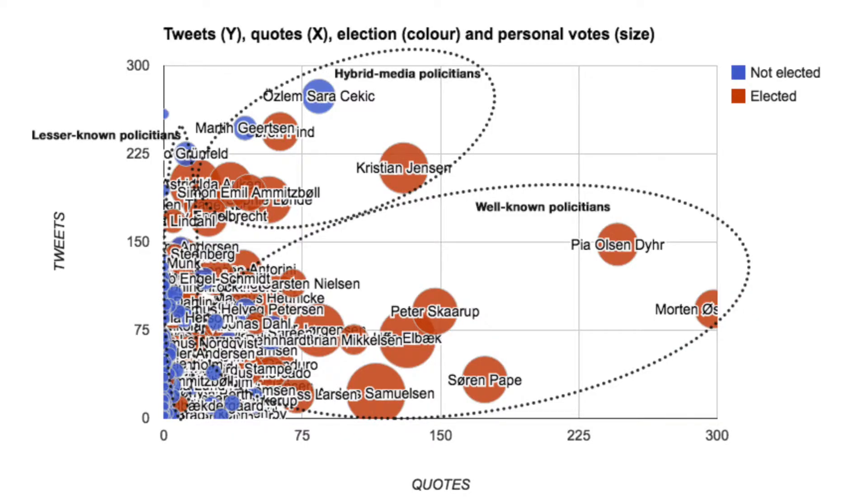I am a media scholar and I look at media texts and media actors, and more specifically on political communication. Because journalism is very often focused on politicians, we look at what's going on in media texts, what's going on with the actors. We look at social media presence and we look at patterns, and we try to say what the implication is for democracy.